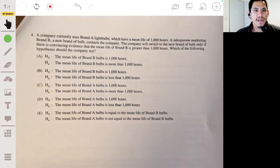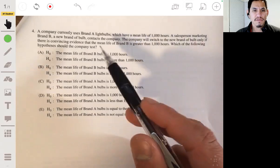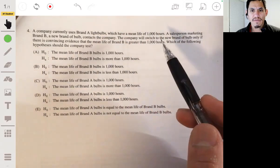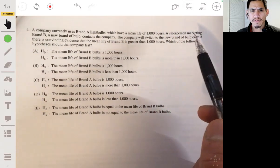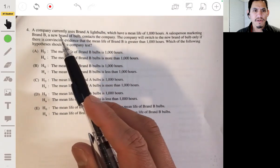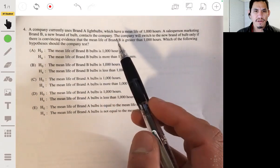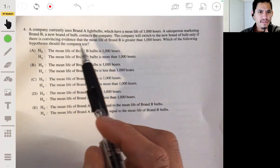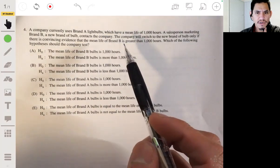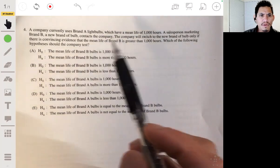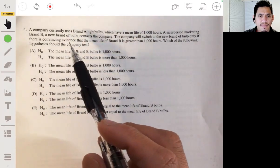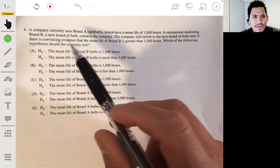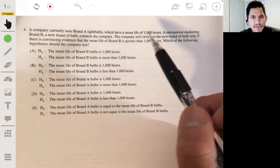Problem four. A company currently uses brand A light bulbs, which have a mean life of 1,000 hours. A salesperson marketing brand B, a new brand of bulb, contacts the company. The company will switch to the new brand of bulb only if there is convincing evidence that the mean life of brand B is greater than 1,000 hours. Which of the following hypotheses should the company test?